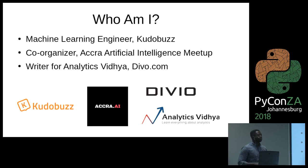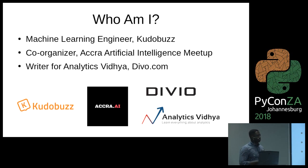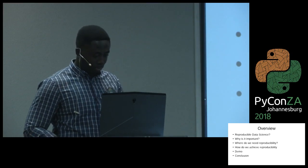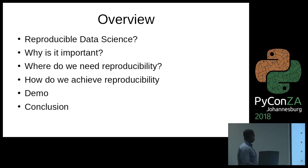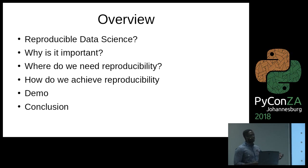So before I continue, how many of us are data scientists, if you can show by your hands? And how many of us have used Docker in our process? Quite a number of people. So basically, what I'm going to talk about is what reproducible data science is, why it's important, why in our data science process we need reproducibility, and then how do we achieve that using Docker.